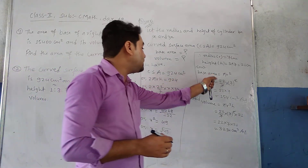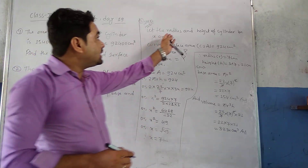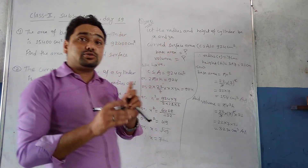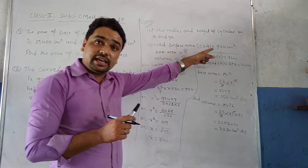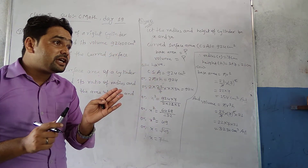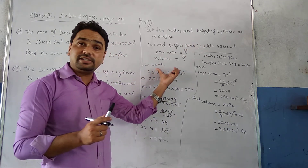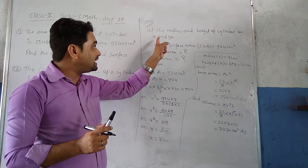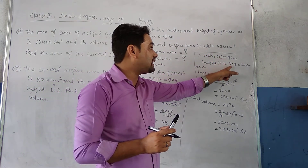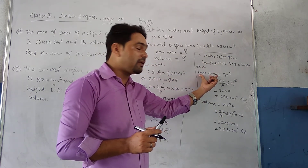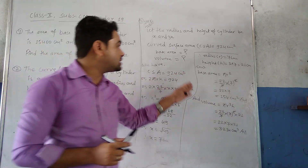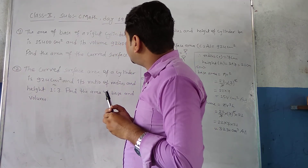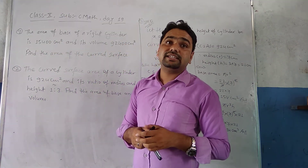So we found the base area and volume for question two. In this question the radius and height were given as a ratio, so we let them as 3x and x. Using the given CSA we found x = 7, then found radius and height, and from those calculated base area and volume.